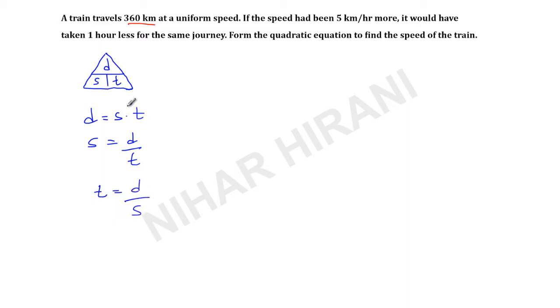Now this will help us to solve this question very easily. So here we have distance 360 km. Let us say normal speed of the train is X, and the increased speed—if speed had been 5 km/hr more—we will write X plus 5. Now if the train travels with the normal speed, then it takes one hour more than if the train travels with the faster speed, 5 km/hr faster.